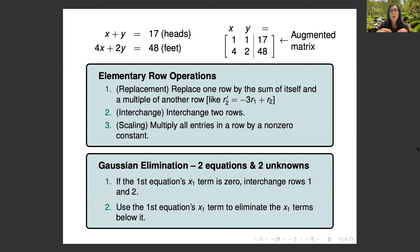The process of Gaussian elimination for a two-by-two system is to take the first equation's X term and use it to eliminate the X term from the second equation. Once the second equation's X term is gone, that equation is much easier to solve, and then you can back substitute to figure out the first equation. We'll work through the whole process so you can see the steps.